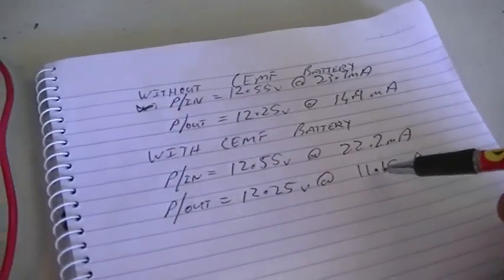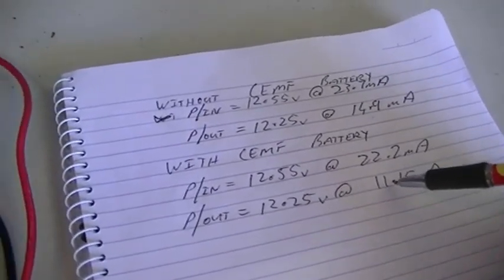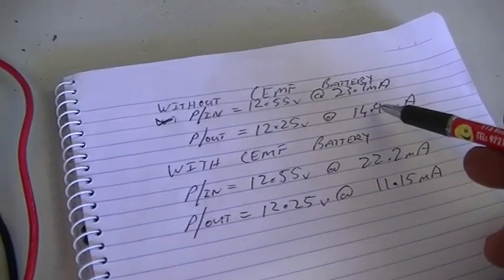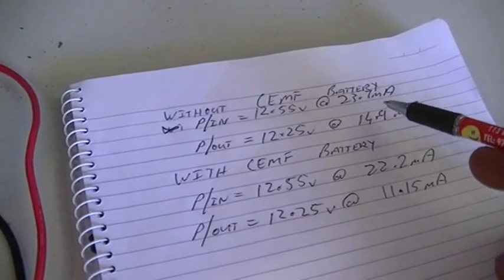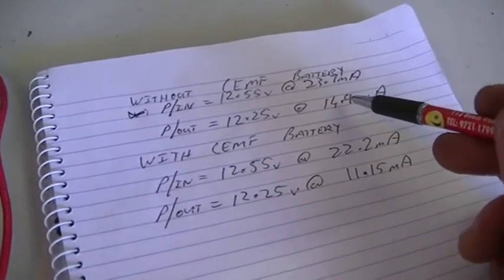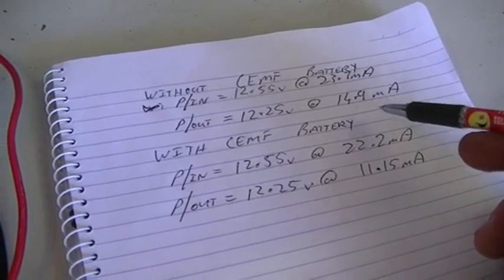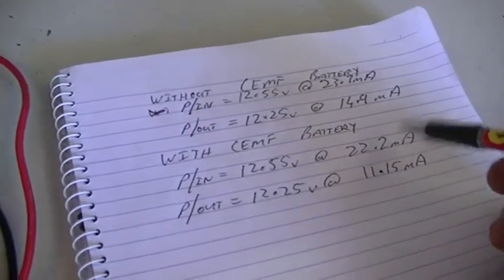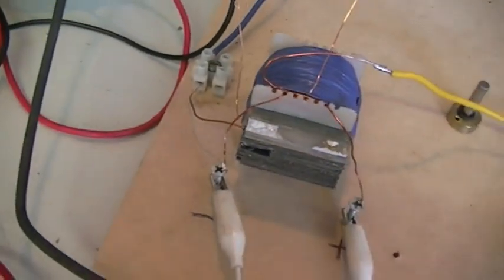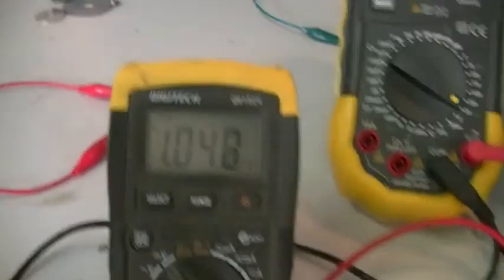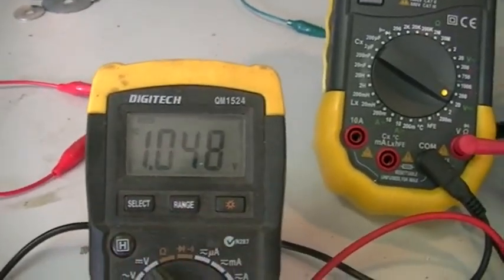Okay, so our output now is 12.25 volts at 11.15 milliamps. Unfortunately, our current has dropped by about 3.8 milliamps. And as you can see, our battery is being charged.